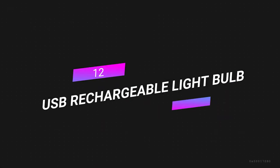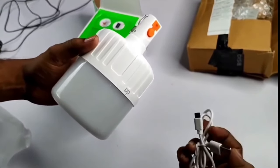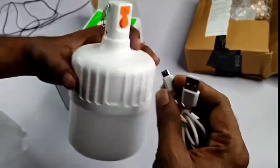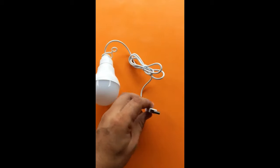Number 12. USB Rechargeable Light Bulb. Introducing the USB Rechargeable Light Bulb that you can recharge using a USB. This light bulb isn't like regular ones. Instead of needing new batteries or an outlet, you can charge it using the same kind of cable that charges your phone. Imagine how handy that can be.